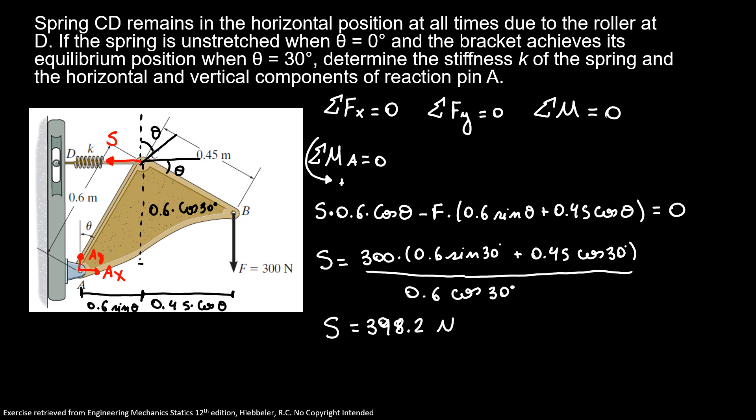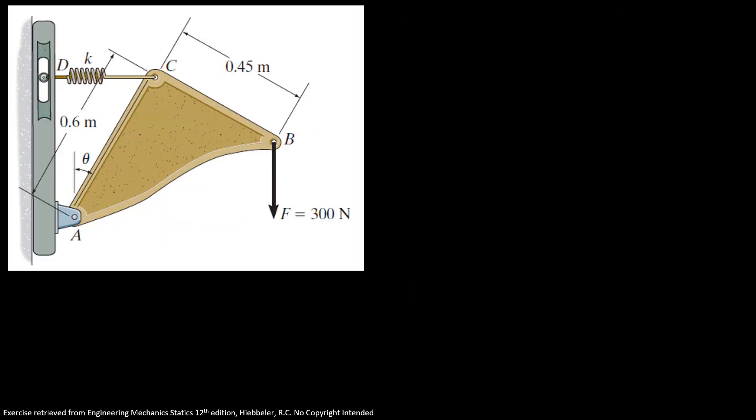Now we can find how much I stretched. So here I have a triangle. From here to here, here is our angle theta. This part would be the amount my spring stretches. So if here is 0.6, here is going to be our delta x.